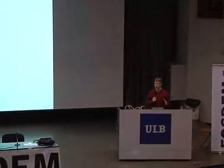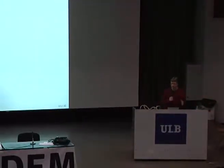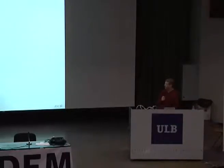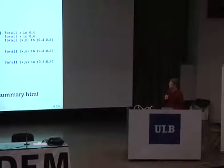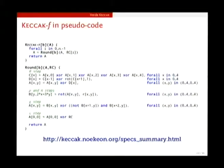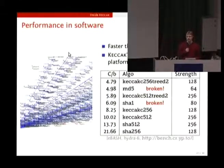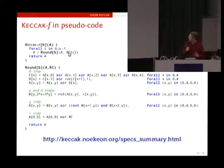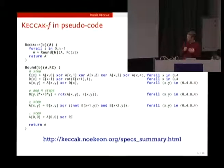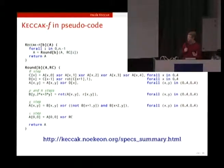So far we spoke a lot about sponge functions and how to use them. If you look at pictures of sponge functions, there is this F function — the permutation — and the bulk of the work of Keccak is really done inside this F function. I'm going to dive into Keccak-F. On our website, we have a description of Keccak-F in pseudocode. Keccak-F is just the repetition of 24 rounds for the case of the largest permutation — 24 times the same kind of operation is performed. That's the top part. And then 24 times the same operation except there is a round constant, something that changes from round to round.